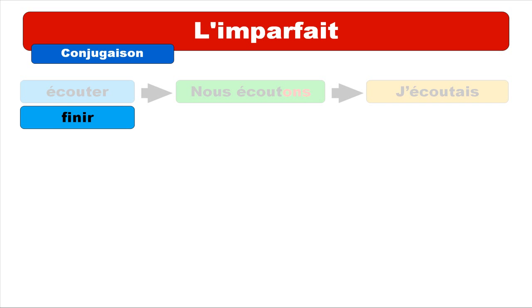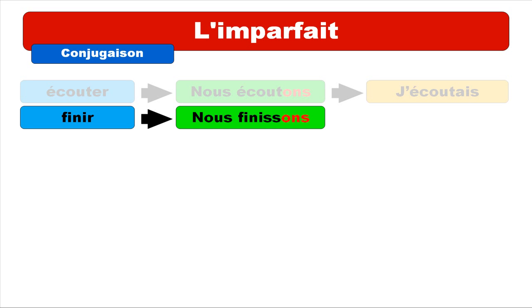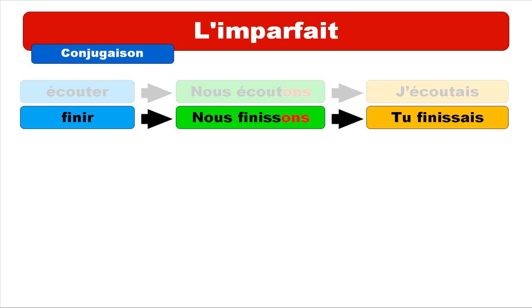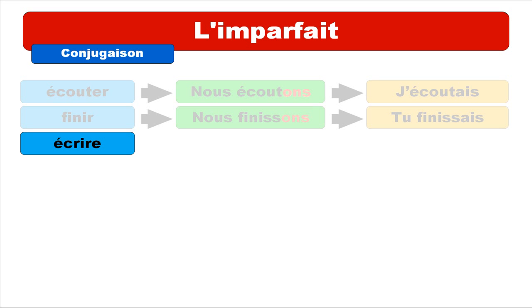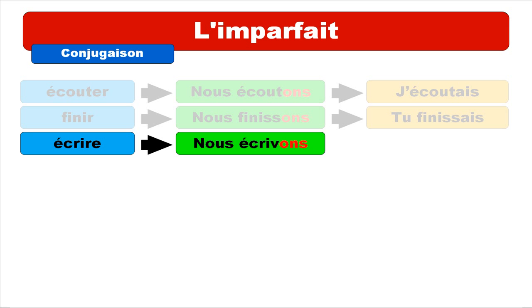Second verb: finir. If you remember, it's 'nous finissons' at the present form for nous. We take away the '-ons' ending and combine it with the ending for 'tu', and we get 'tu finissais'. Third verb: écrire. Present form for nous: 'nous écrivons'. We take away the ending and combine it with the ending for 'il' at the imparfait, and we get 'il écrivait'.